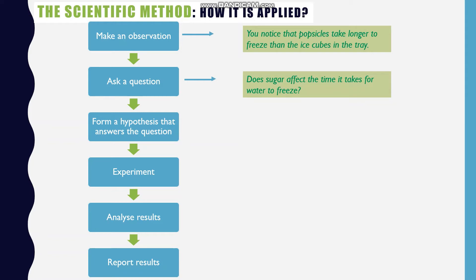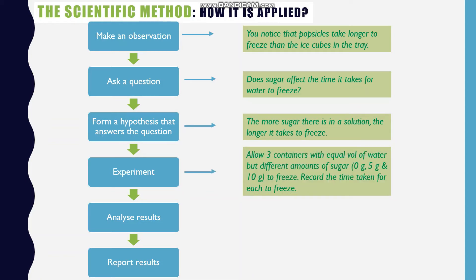Then you form a hypothesis, which is a likely suggestion as to your answer for the question. So you could say the more sugar there is in a solution, the longer it takes to freeze. Then you carry out an experiment to test your hypothesis. So let's say we have three containers with equal volumes of water but different amounts of sugar. One with no sugar, one with five grams of sugar and the other with 10 grams of sugar. So you allow them to freeze and record the time it takes.